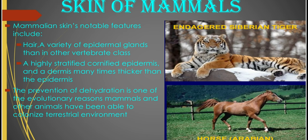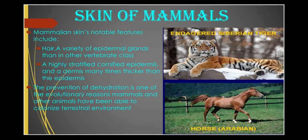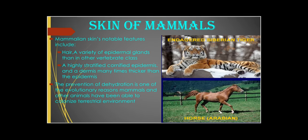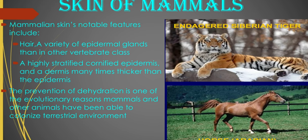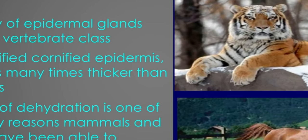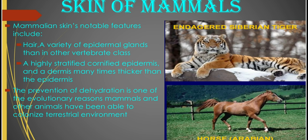Here is the skin of mammals. Mammalian skin shows notable features. You have the hair, which is actually an epidermal derivative. You have a variety of epidermal glands in the vertebrate class. The stratum corneum is very specialized and stratified, and the dermis is many times thicker than the epidermis in the skin of mammals. The skin of mammals is such that there is prevention of dehydration, and this is one evolutionary reason why mammals are able to thrive as terrestrial animals.